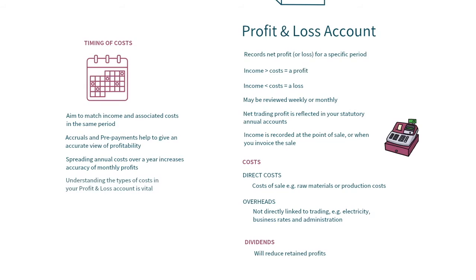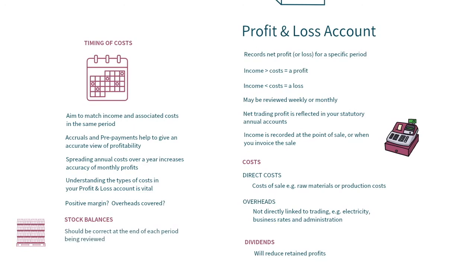An understanding of the types of costs within your profit and loss account will be important in helping you to understand how much trading activity is required both to make a positive margin on your trading activity, and also what is required to cover the appropriate share of your overhead costs. One of the most common issues in understanding accurate profitability levels within smaller businesses relates to the timely monitoring and recording of stock balances. It's important that your stock balances recorded in your accounting system are correct at the end of each period being reviewed, especially if your stock levels are variable. Incorrect stock measurements can have a significant impact on the cost you recognise in that period, and will skew your understanding of profitability.